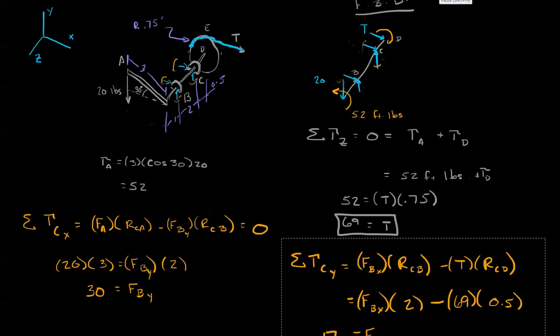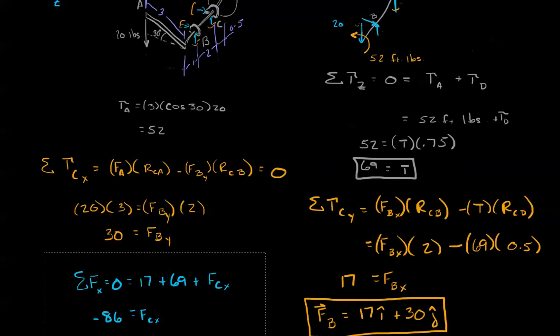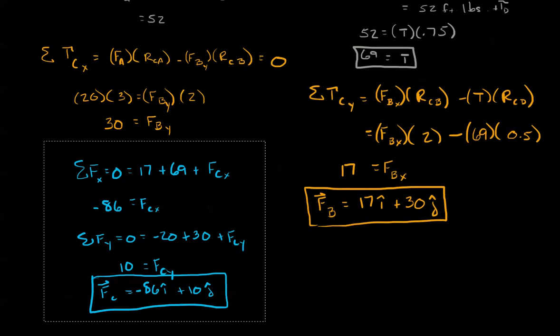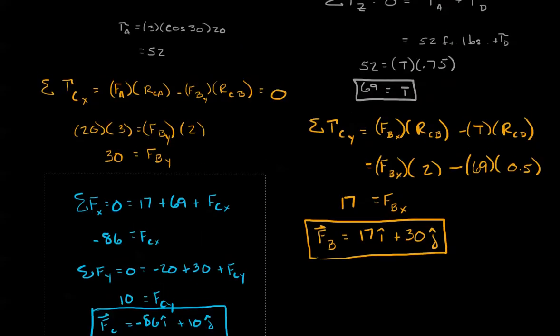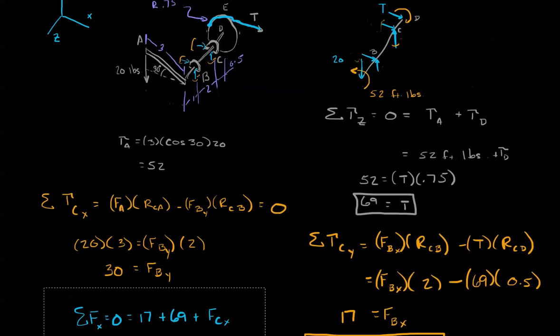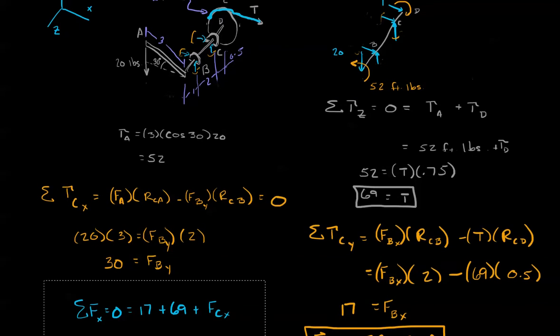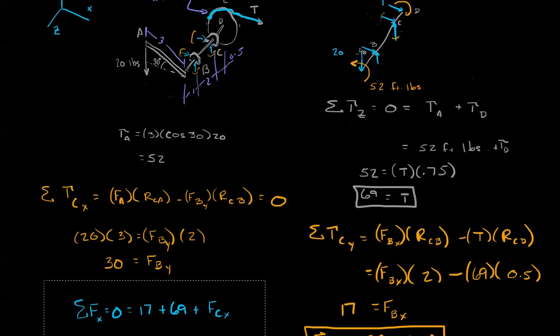All right, here we go. What I've simply done is I've simply said the sum of the forces in the x direction is zero. Well, we know, let's pull our free body diagram. We can just see it. All right, in the x direction, we have the tension in the positive x direction, 69. We have the force at B, that's 17.